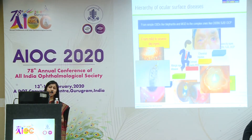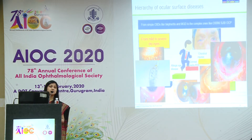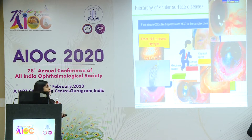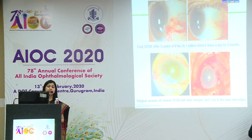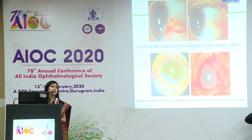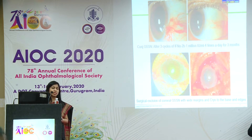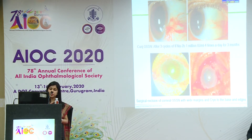Going ahead from the chemical injuries, it's the severe dry eyes like in SJS and OCP, and of course OSSN, which is becoming much more common these days. In OSSN, one has to know and decide, depending upon the location and the amount involved, whether one would like to go in for medical treatment, surgical treatment, or a combination of the two.